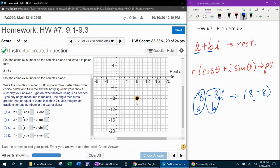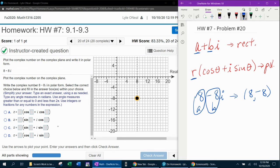So there's the point plotted. Now they also want me to convert this from rectangular to polar form, which means I need to find R and theta. So the formula for calculating R, that is the square root of A squared plus B squared.